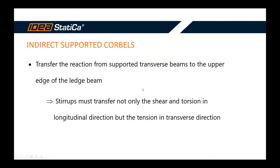Today we are going to talk about continuous ledge beam or L-shaped beam, and we will go through the workflow. As mentioned, the problem is that we need to transfer the reaction to the upper edge of the ledge beam. We cannot forget that the stirrups need to safely transfer longitudinal shear and torsion, plus the tension from the solution of the transverse direction.